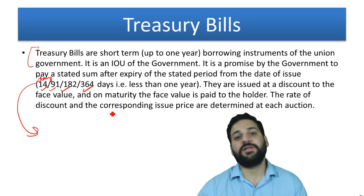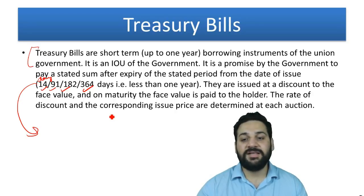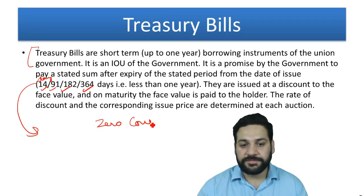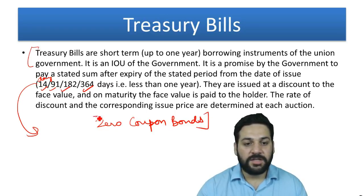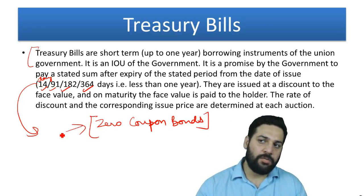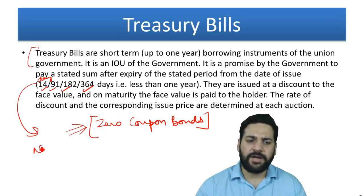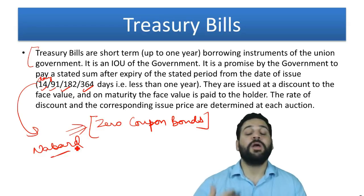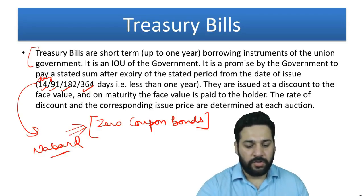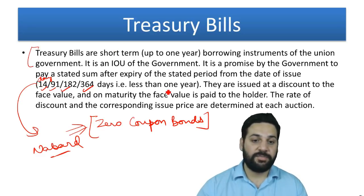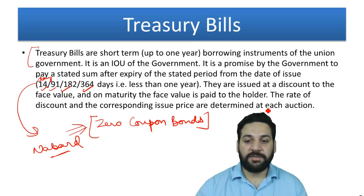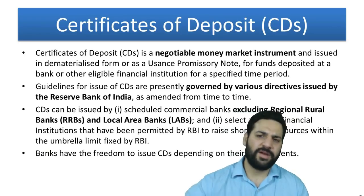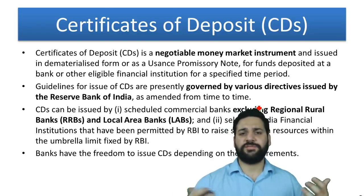Zero coupon bonds are also issued at a discount with no interest paid. Previously, NABARD used to issue zero coupon bonds as deep discount bonds. The discount rate on treasury bills is determined at each auction and is influenced by factors like the value of the rupee and other market conditions.